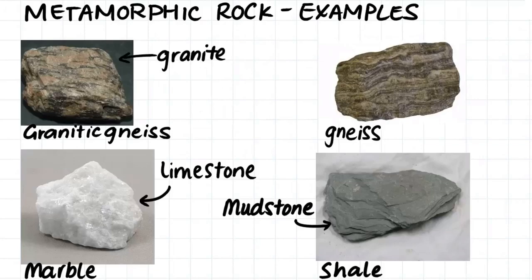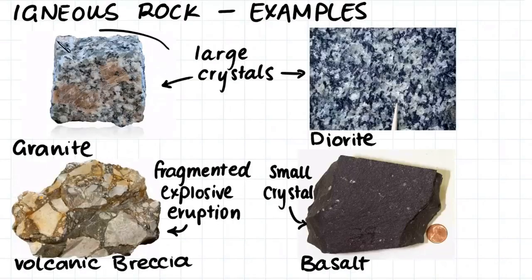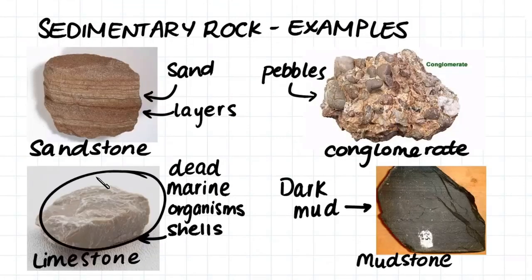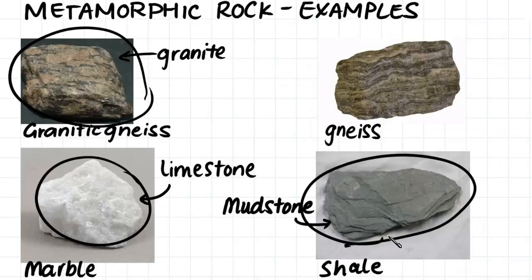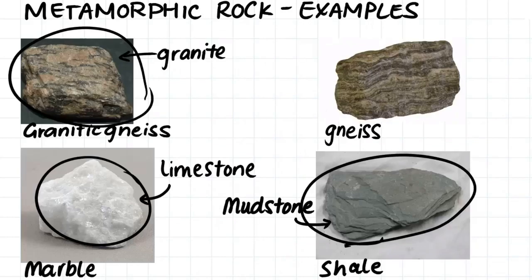Here are a few photos of different types of metamorphic rocks. We can see some of the sedimentary and igneous rocks we have seen earlier in the video, however now they have been metamorphosed. Granitic gneiss forms when granite is metamorphosed. Marble forms through the metamorphosis of limestone, and slate forms through the metamorphosis of mudstone. Gneiss is a general term which is used to describe any metamorphic rock that has a foliation pattern in it, which forms due to the metamorphism process. Gneiss can form from either igneous or sedimentary rock.